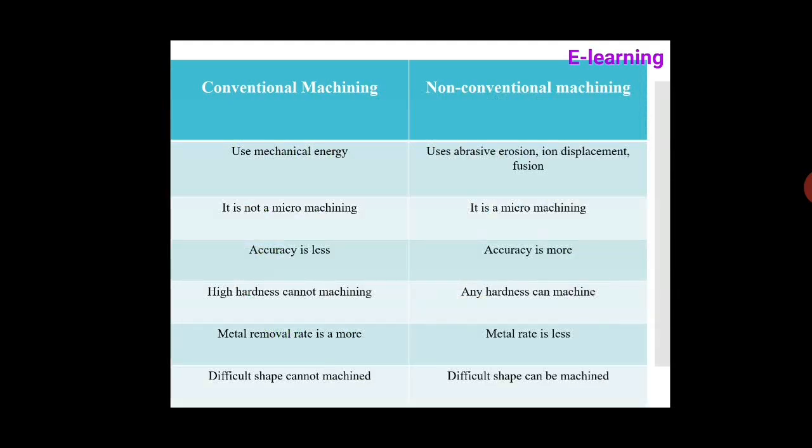Conventional machining is not a micro machining process, but non-conventional machining is a micro machining process operating at the micron level. In terms of accuracy, conventional machining is less accurate, while non-conventional machining is a more accurate process.